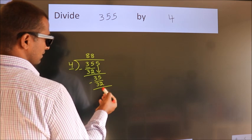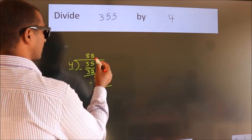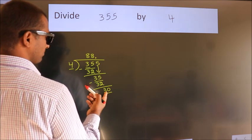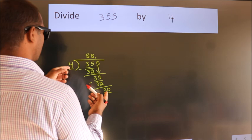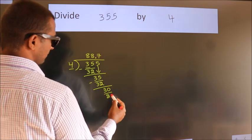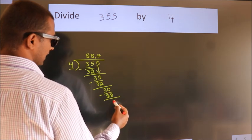After this, no more numbers to bring down. So what we do is we put a dot and take 0. So 30. A number close to 30 in the 4 table is 4 times 7 equals 28. Now we subtract. We get 2.